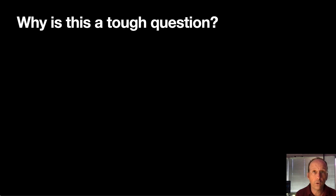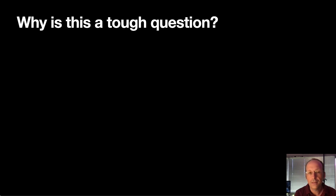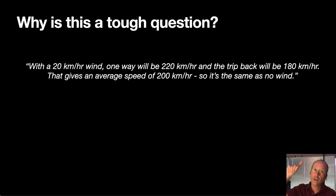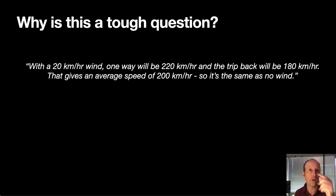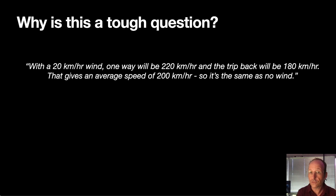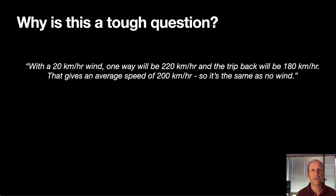But why is this a tough question? It's tough because here's a very common thought process: with a 20 km/h wind and an airspeed of 200, one way you're going 220 and the other way you're going 180. Those average to 200 — so it's the same as doing no wind at all. That's the incorrect thought process. Let's see why you can't just average these velocities.